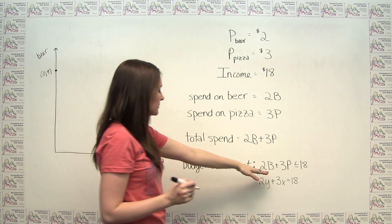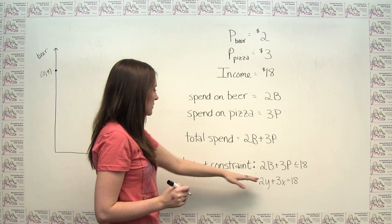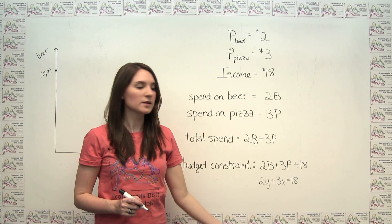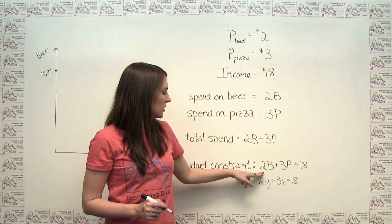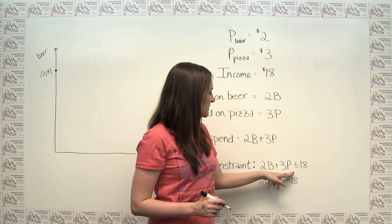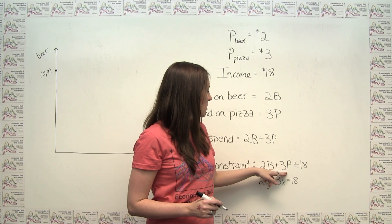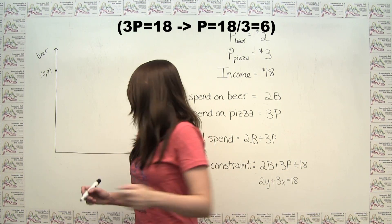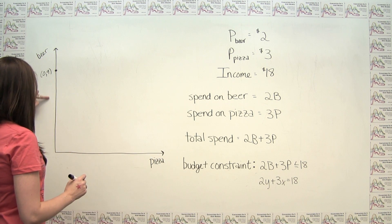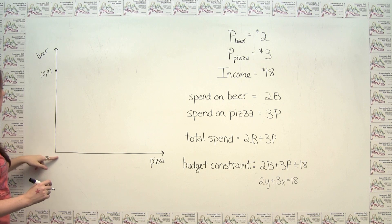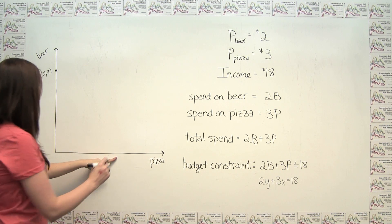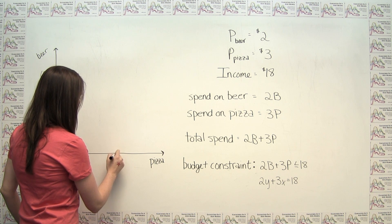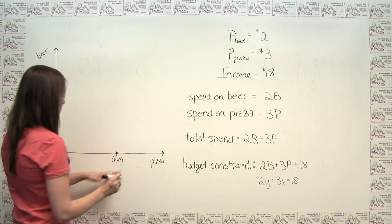We could also think about the other end of our budget constraint. In that case, let's consider what happens if we're only consuming pizza. So in that case, we're not going to be consuming any beer, and we're going to be spending all of our $18 on pizza. If we're spending all of our $18 on pizza, we'll be able to buy 6 slices of pizza. So 0 on the beer axis is down here, and then we go out to 6 on the pizza axis. And you'll notice that this guy here is the point 6, 0.